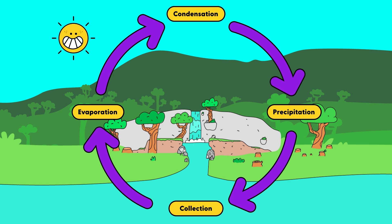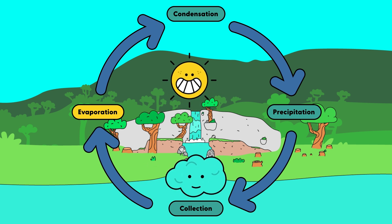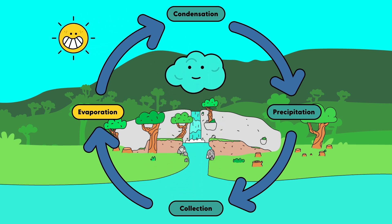It all starts when water from oceans, rivers and lakes gets heated up by the sun and turns into vapor, which rises up into the sky. The vapor cools down and turns back into tiny water droplets, forming clouds in the sky.